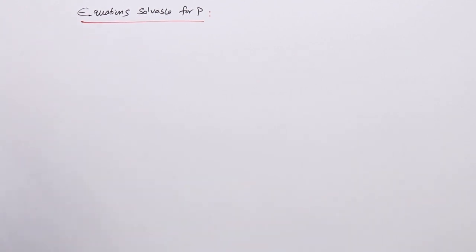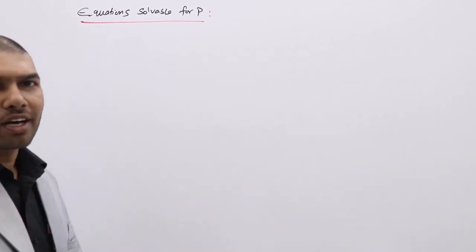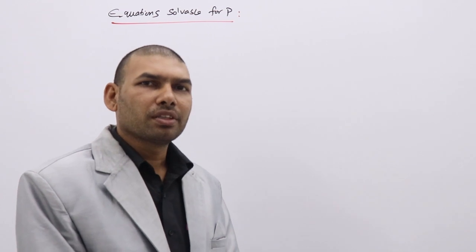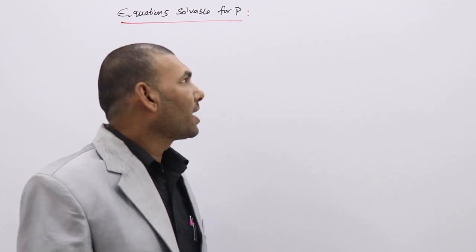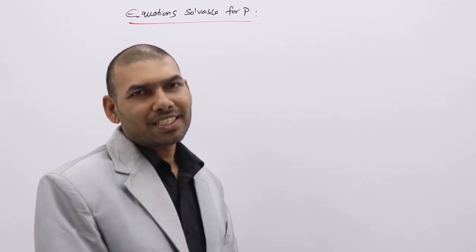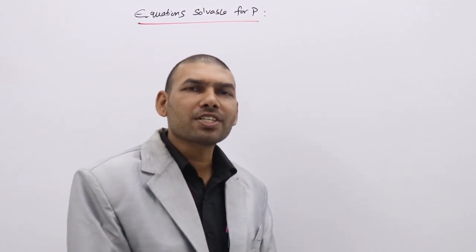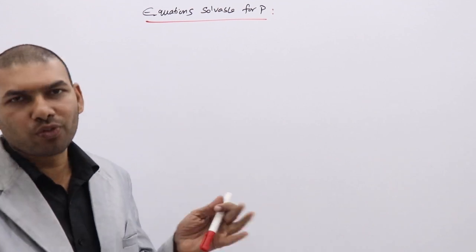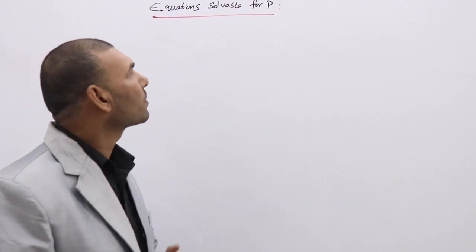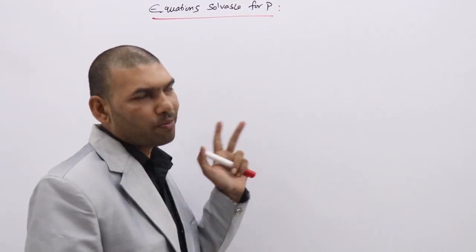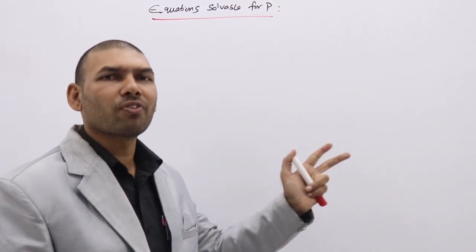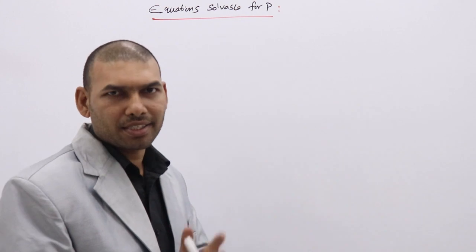The first type of differential equations are first order but not first degree. As we discussed earlier, the DE of first order but not first degree is classified into four ways: Solvable for P, Solvable for X, Solvable for Y, and Clairaut's equation.